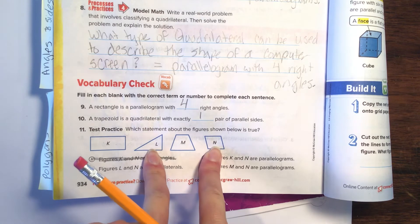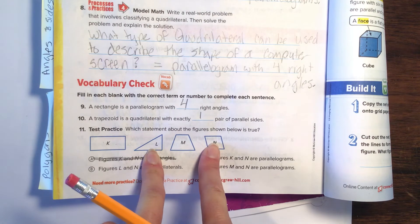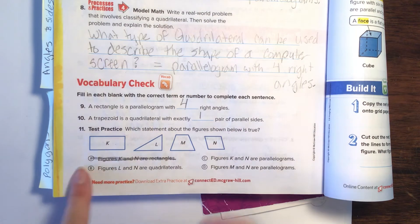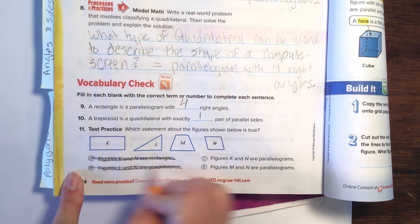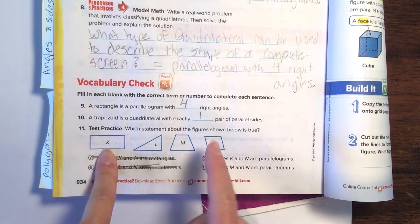Figures L and N are quadrilaterals. Well, quadrilateral has to have four sides, four angles, and four vertices. That has four angles, four sides, and vertices, but that one doesn't. So that statement is not correct.